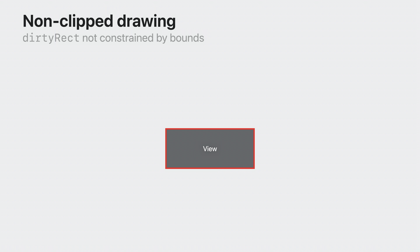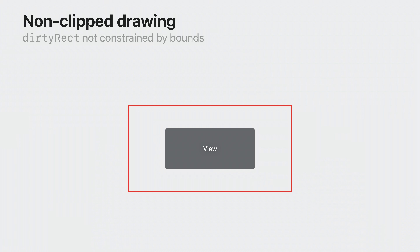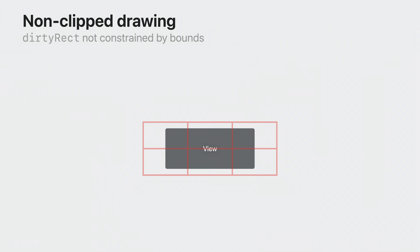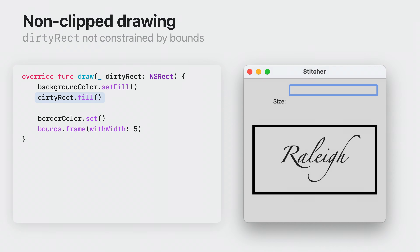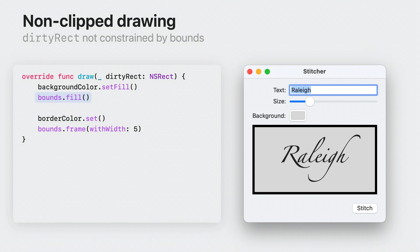AppKit reserves the right to pass a dirtyRect that is larger than the view's bounds, and also reserves the right to subdivide drawing into as many rectangles as it needs. What this means for you is that you should use the dirtyRect to decide what to draw, not where to draw. This draw override fills the past-in dirtyRect with a background color, causing the fill to spill outside the view's bounds and cover other UI. The view isn't using the dirtyRect to draw the frame — its background fill should precisely fill what your design requires, no more, no less.